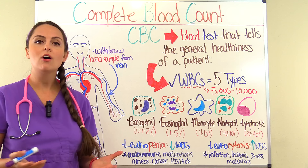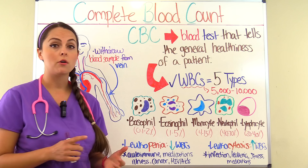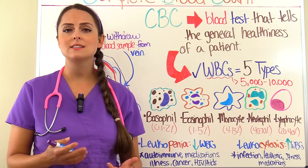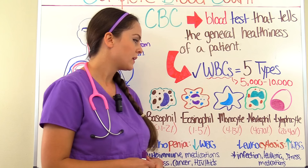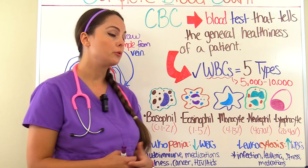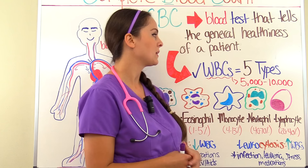Things that can cause leukopenia include autoimmune conditions, medications like chemotherapy, drugs that suppress the immune system, some mental health drugs, and severe illness like sepsis, cancer, HIV, and AIDS. On the flip side, when the white blood cell count is elevated, that is known as leukocytosis. Things that can increase the white blood count include infection, leukemia, extreme stress, and medications.